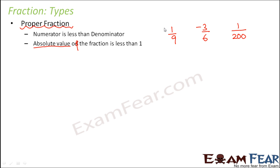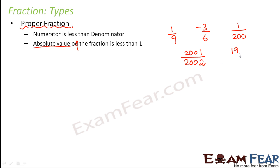In a proper fraction, the absolute value is always less than 1. When you look at the value of 1/9, you see it is less than 1. Take any example — say 2001 divided by 2002. This is also a proper fraction because the numerator is lesser, and when you divide, the value is less than 1. Similarly, 19/20 is a proper fraction and its value is also less than 1.